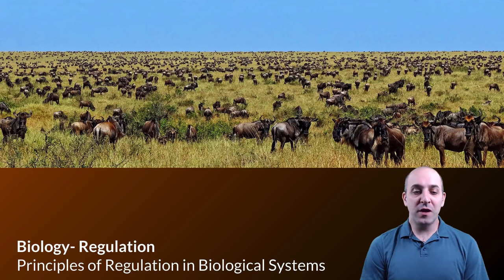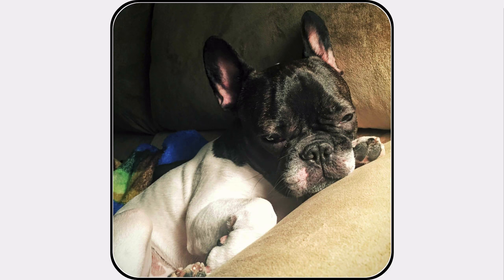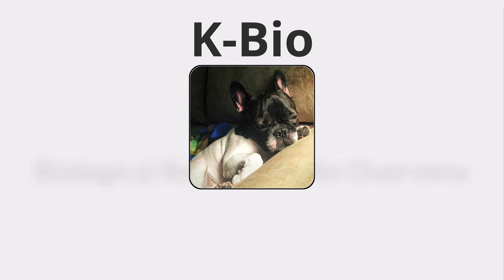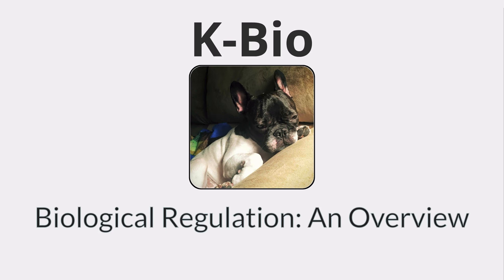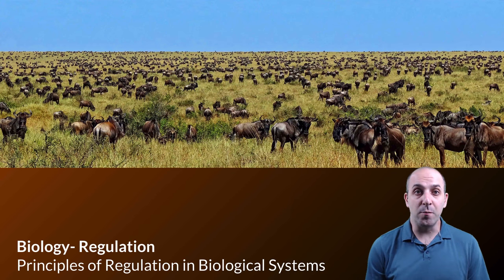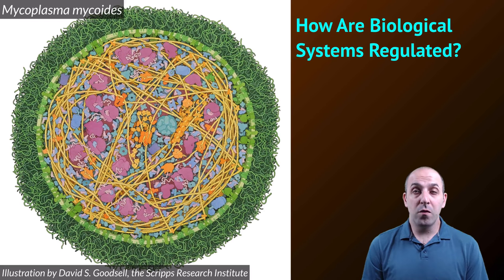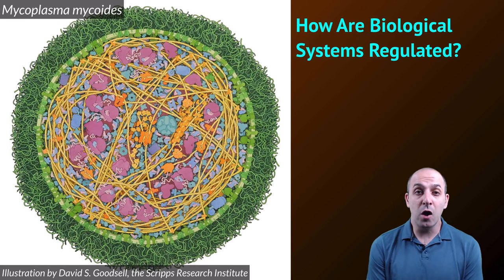Hi, and welcome to the first video in the regulation section of our course. This video is going to deal with an overview of regulation in biological systems. I figured I'd start with this picture of the Serengeti because the Serengeti is a complex biological system. But of course all biological systems are complex. Even the simplest single-celled organisms, like this mycoplasma, are incredibly complex systems. The reason that biological systems can be this complex is because they're regulated. Regulation is a universal property of biological systems across all domains.